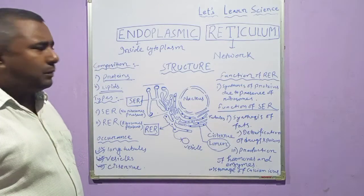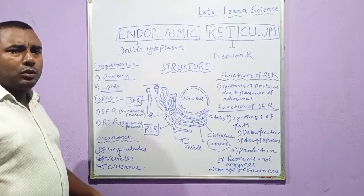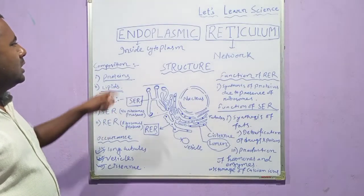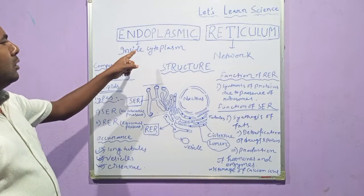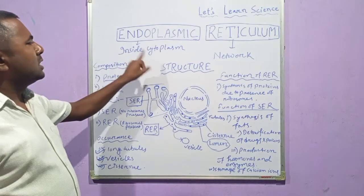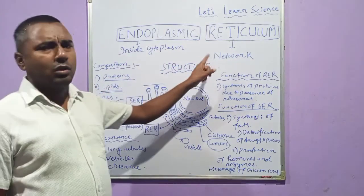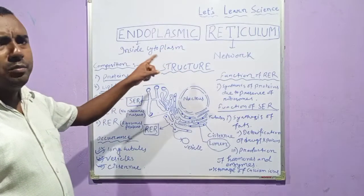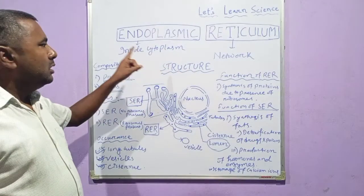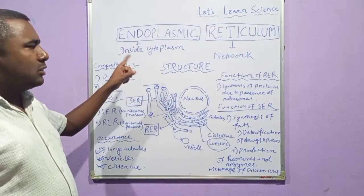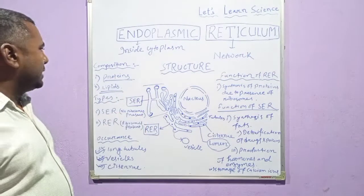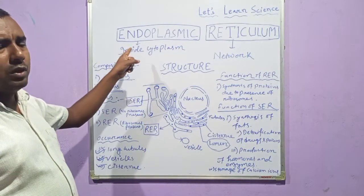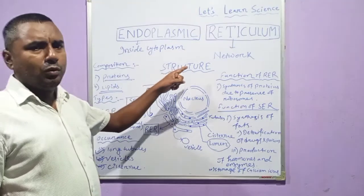Let us recap. First, the meaning of endoplasmic reticulum: 'endoplasmic' means inside the cytoplasm, and 'reticulum' means network. So it means the network-like structure inside the cytoplasm. That particular structure is called the endoplasmic reticulum, and it is one of the most important cell organelles.